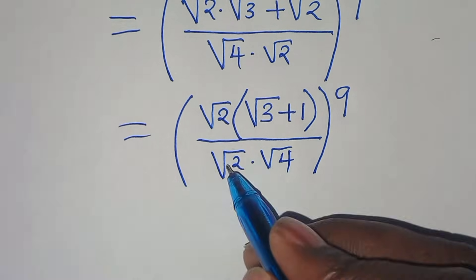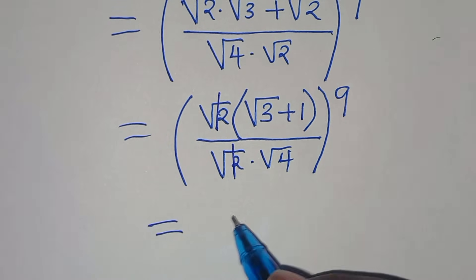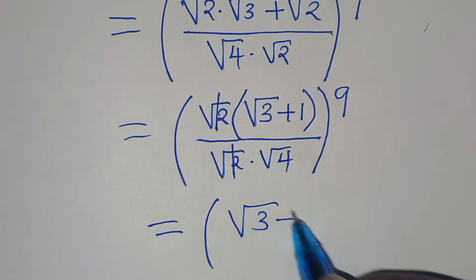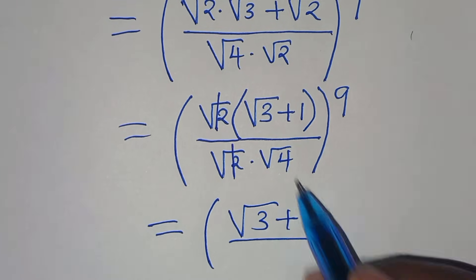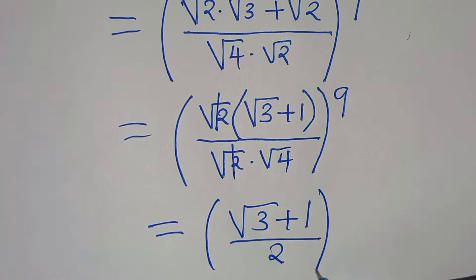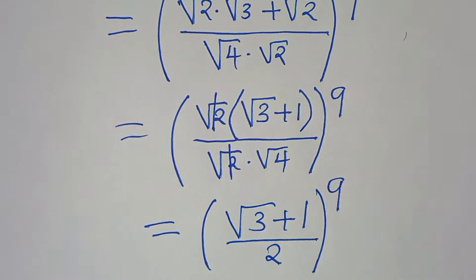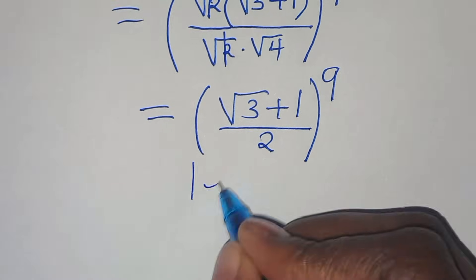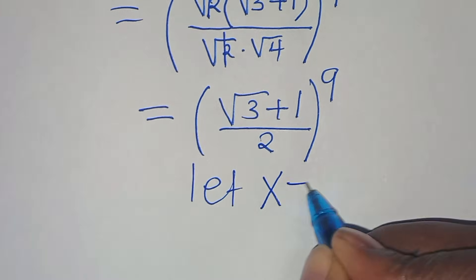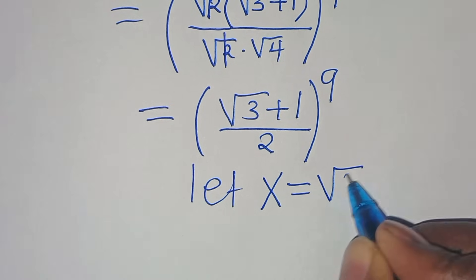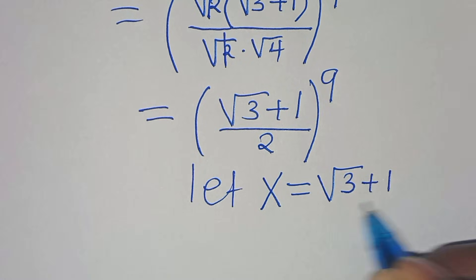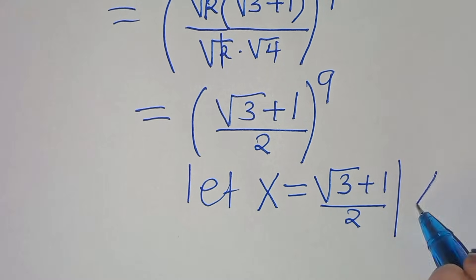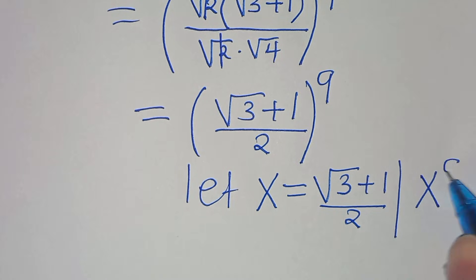Let's simplify square root of 2 in the numerator and denominator, so that now we have in the numerator square root of 3 plus 1, divided by square root of 4 which is 2, everything raised to the power of 9. We can let x be equal to square root of 3 plus 1 divided by 2, so the question is: what is x to the power of 9?